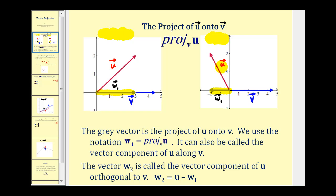So the projection doesn't necessarily have to be in the same direction, but it would be a scalar multiple of vector v. Vector w sub two is called the vector component of u orthogonal to v. We can find w two by taking vector u and subtracting vector w sub one. Notice that the green vector is orthogonal to the blue vector, and vector w one plus vector w two equals vector u.